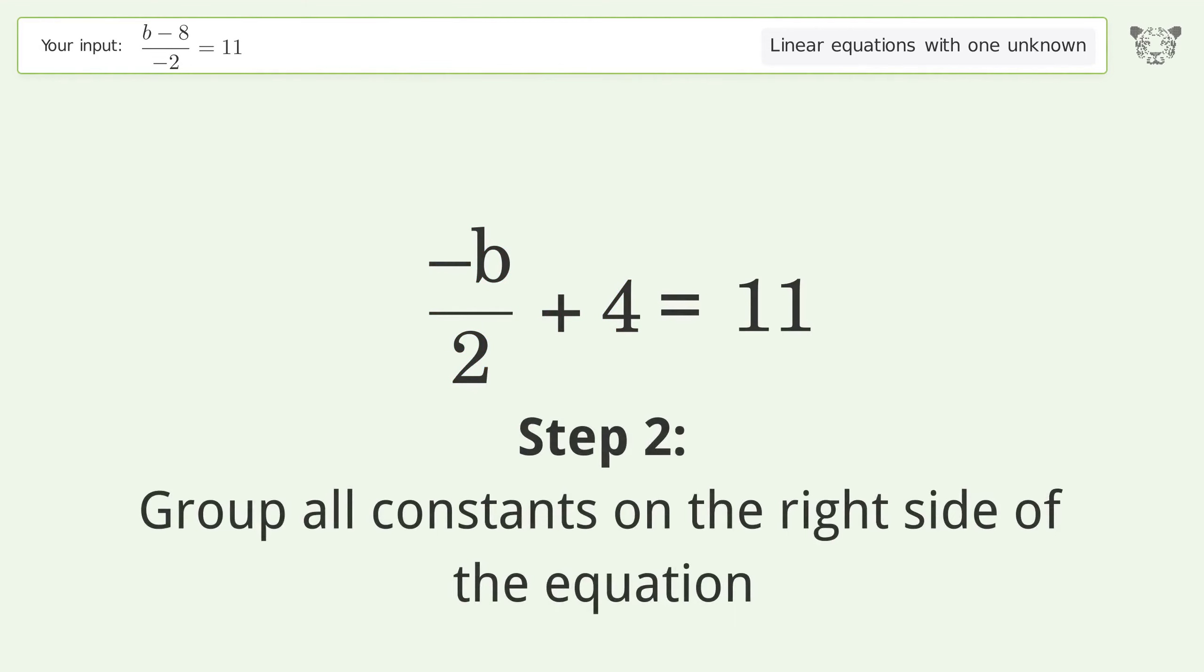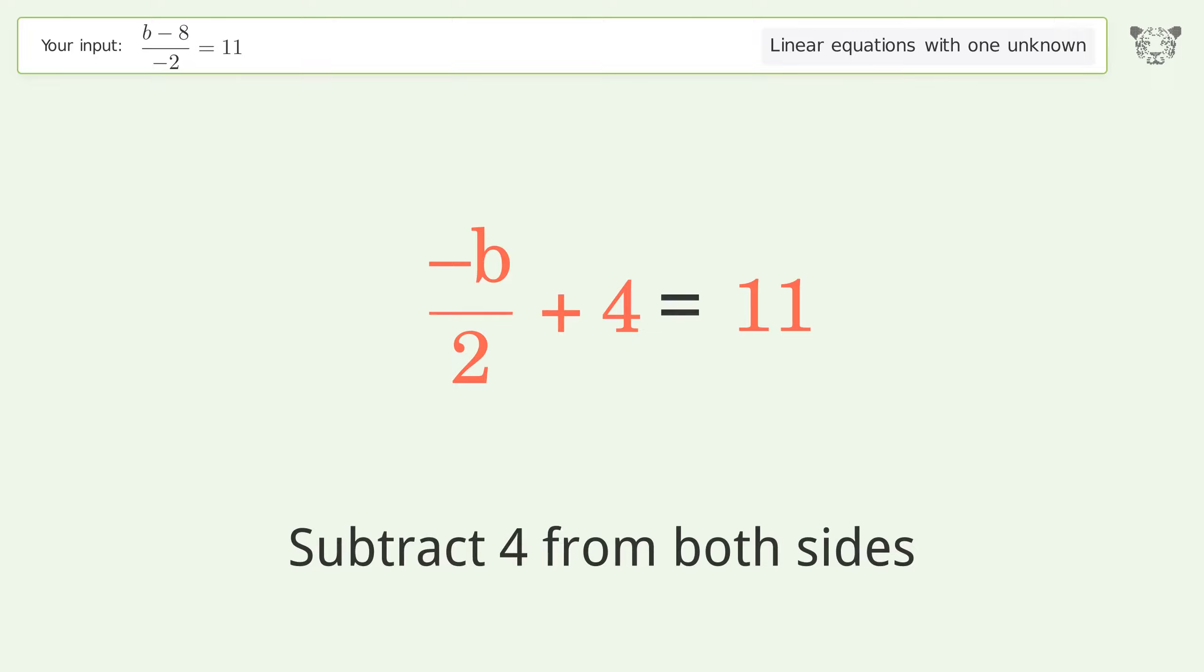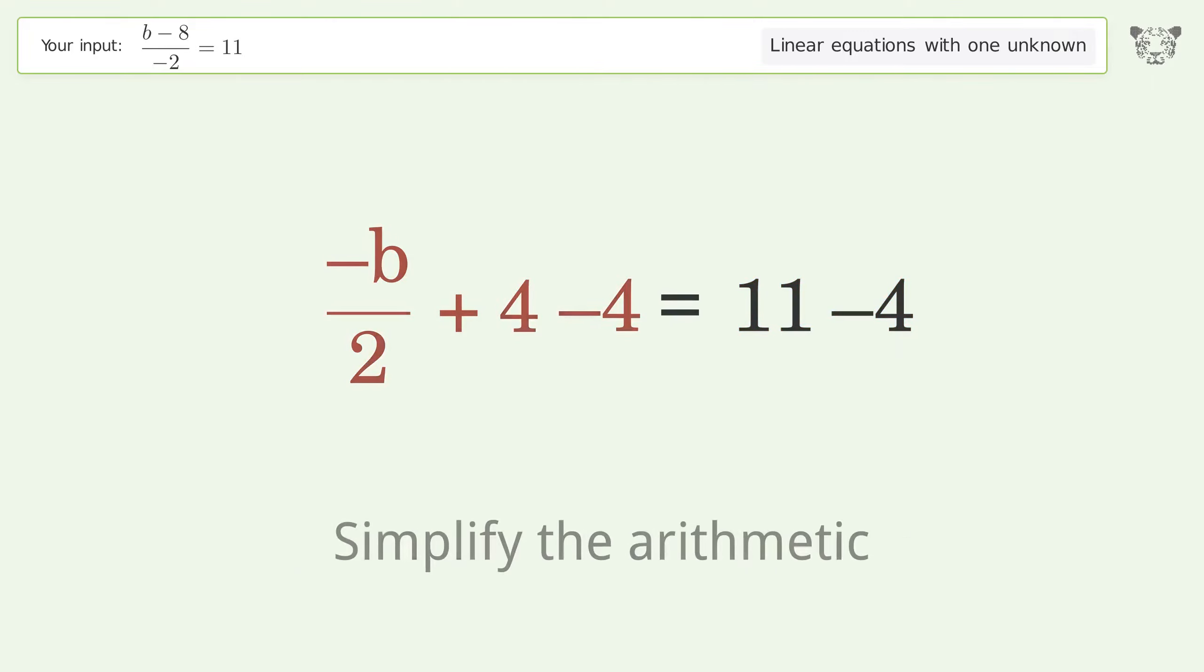Group all constants on the right side of the equation. Subtract 4 from both sides. Simplify the arithmetic.